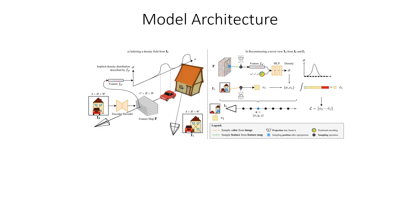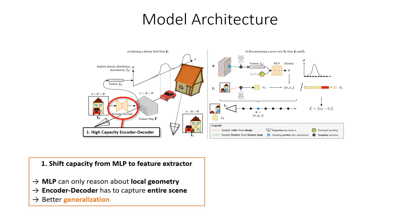Compared to other related works, for example PixelNeRF, there are two main differences in our proposed architecture. First, we designed the MLP to be very lightweight and give the encoder-decoder a much higher capacity. Through this bottleneck, the MLP cannot reason about global scene properties and it only deals with local geometry.